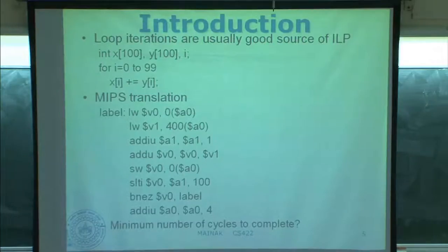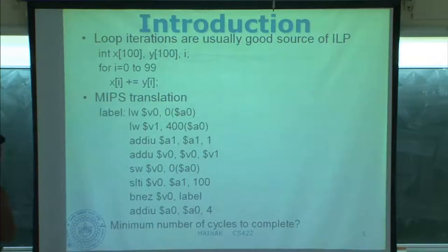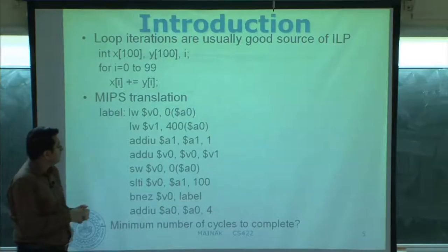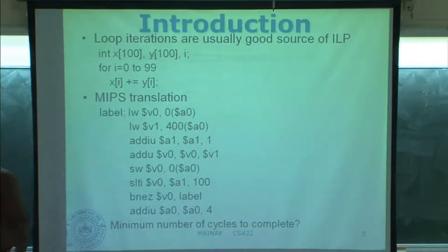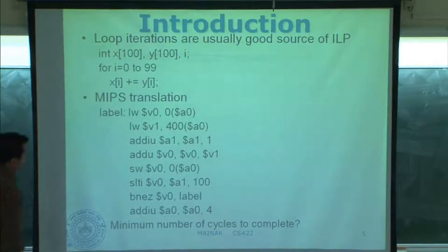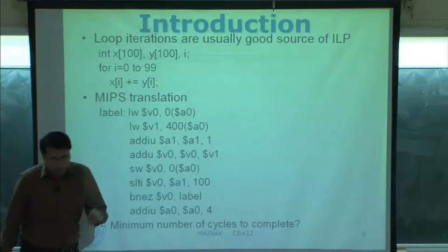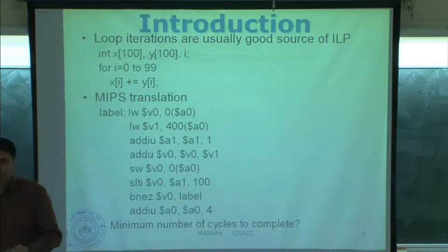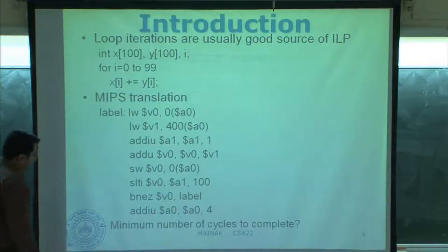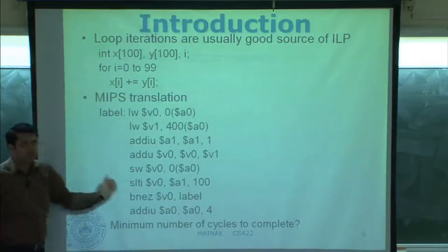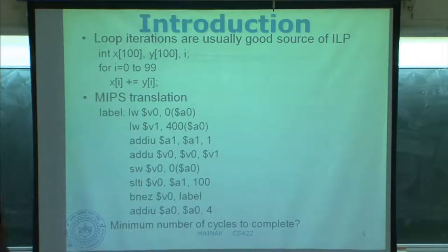Now, the question is — with our model of execution, we are fetching at a certain rate. The execution model is that whenever an instruction is ready to execute, I will execute it. I also remove the constraint that in a particular cycle you can only execute one instruction — you can execute an unlimited number of instructions in a cycle. So the question is: what is the minimum number of cycles required to complete one iteration?